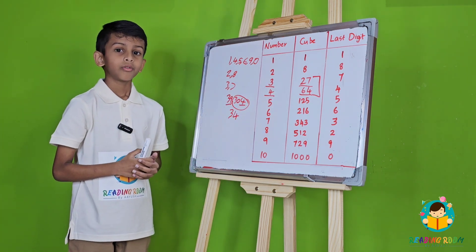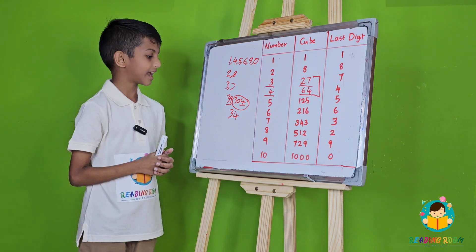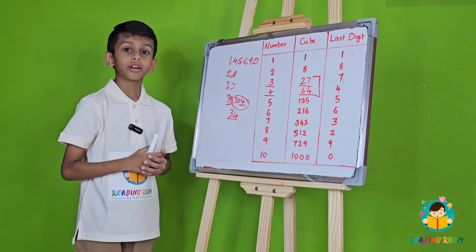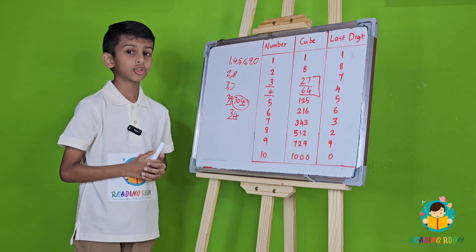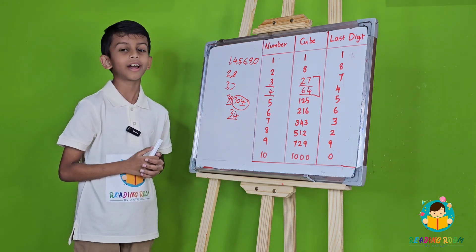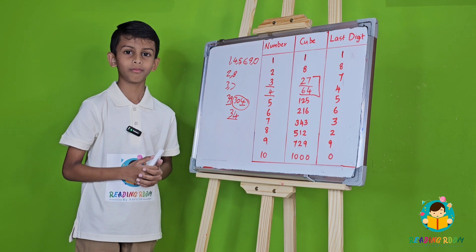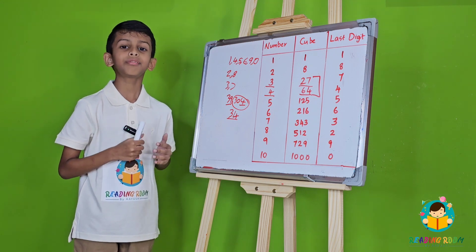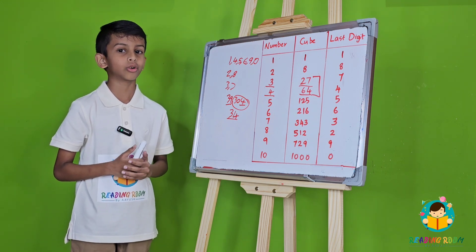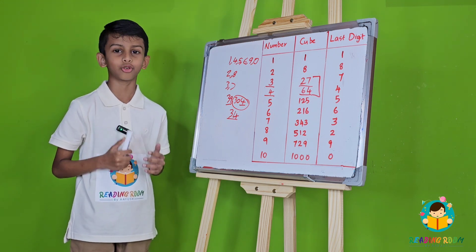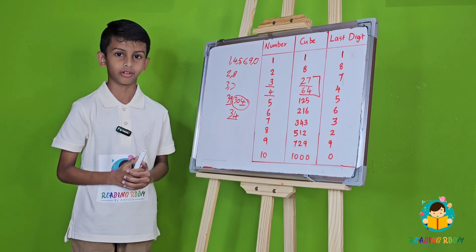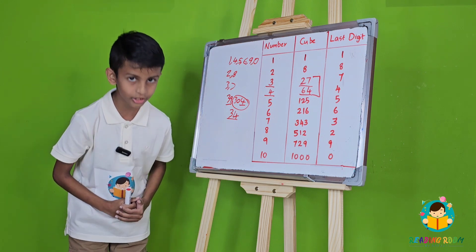Now we have our final answer. 34 is the cube root of 39304. This same trick can be used to find out all of the cube roots up to the cube of 100. Thank you.